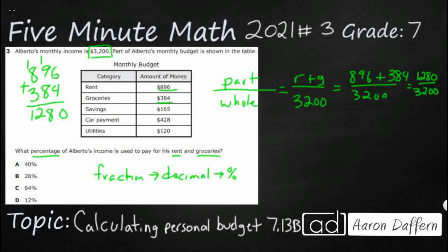We can make this easier. We have to turn the fraction into a decimal by dividing, but we can divide both sides by 10 — just drop the zeros. That turns 1,280 over 3,200 into 128 over 320. We convert to a decimal by dividing 320 into 128.